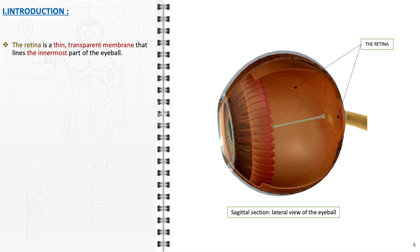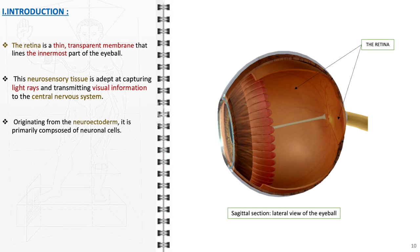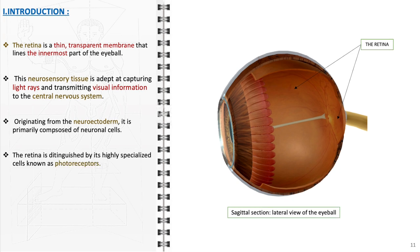The retina is a thin, transparent membrane that lines the innermost part of the eyeball. As a neurosensory tissue, it excels in capturing light rays and transmitting visual information to the central nervous system. The retina originates from the neuroectoderm and is primarily composed of neuronal cells. It is distinguished by its highly specialized cells, known as photoreceptors, which are crucial for converting light into neural signals.